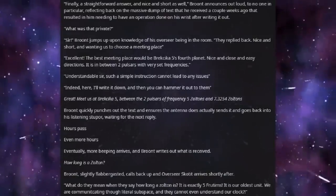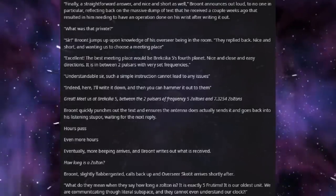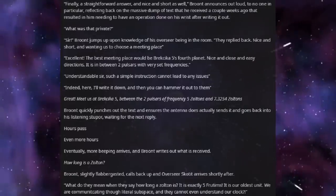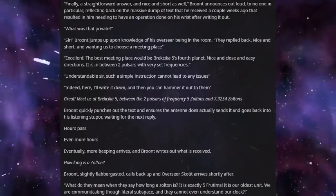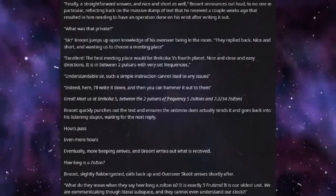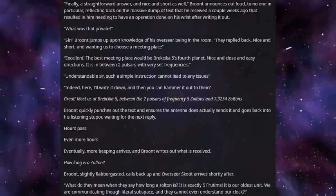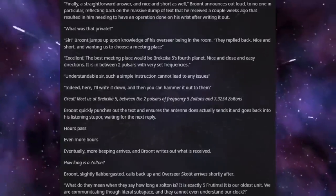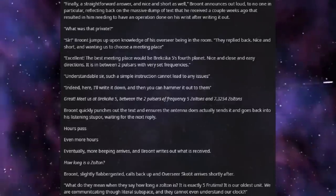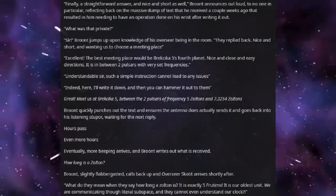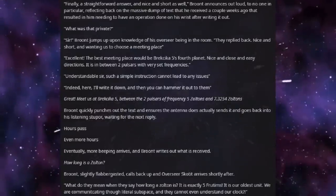Excellent. The best meeting place will be Brickhiker Fire's Fourth Planet. Nice and close and easy directions. It is in between two pulsars with very set frequencies. Understandable, sir. Such a simple instruction cannot lead to any issues. Indeed. Here, I'll write it down, and then you can hammer it out to them. Great. Meet us at Brickhiker 5 between the two pulsars of frequency 5 Zoltons and 7.3254 Zoltons. Brundt quickly punches out the text and ensures the antenna does actually send it, and goes back into his listening stupor, waiting for the next reply.